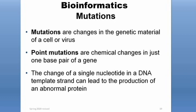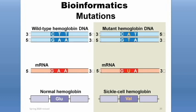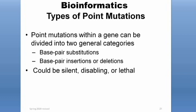The next topic we'll cover are mutations. Mutations are changes in the genetic material of a cell or a virus. Point mutations specifically are chemical changes in just one base pair of a gene, and even a change in a single base pair can cause the production of an abnormal protein. For example, in hemoglobin, a single nucleotide change converts glutamic acid in normal hemoglobin into valine, which causes the sickle cell phenotype. Point mutations fall into two general categories: base pair substitutions or base pair indels — insertions or deletions — and these can be silent, disabling, or lethal.